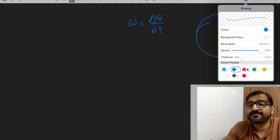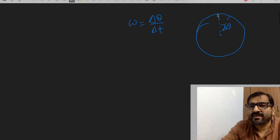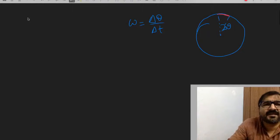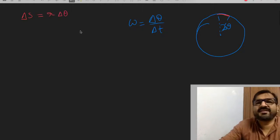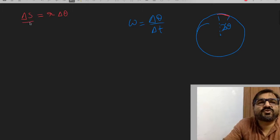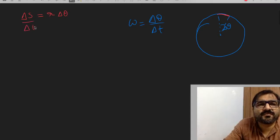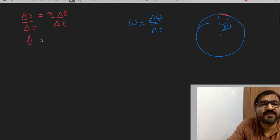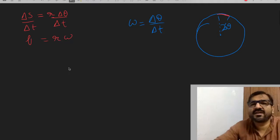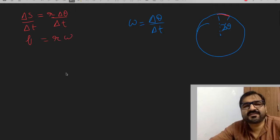There is a simple thing - relating angular velocity to linear speed. The particle traveled this much, delta s. How much is delta s? It's r times delta theta. Divide both sides by delta t. This becomes speed, this becomes omega. So v equals omega times r. That's it.